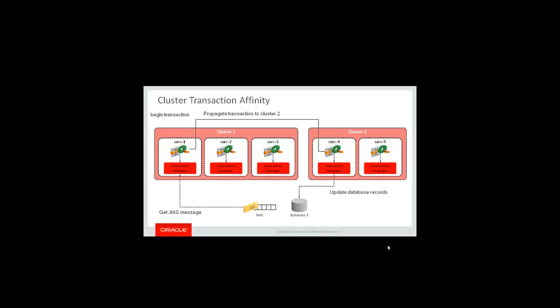That application makes an insert into a database and returns control to the application on server one, propagating the transaction back to cluster one. Instead of landing in any other available server, it will land back in the original server where the transaction was started — the coordinator. The optimization comes because instead of making another server in cluster one a subcoordinator, the transaction now spans fewer servers, saving the RMI two-phase commit calls to subcoordinator servers.